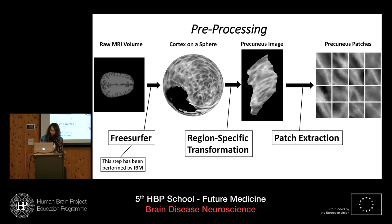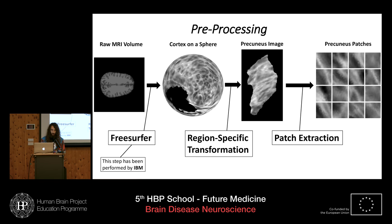To treat the cortical surfaces in a patchwise manner, we have to map them to image space. Starting from the spherical representation of cortical surfaces, which is extracted using FreeSurfer from MRI volumes, we rotated the sphere in a region-specific manner such that the region we are considering results on the equator, so the final image is not distorted.